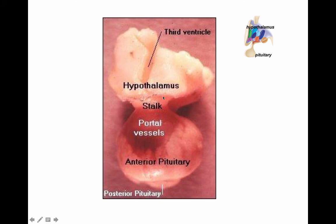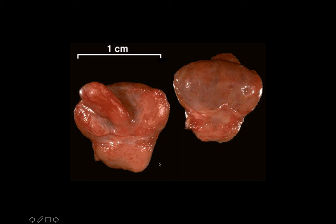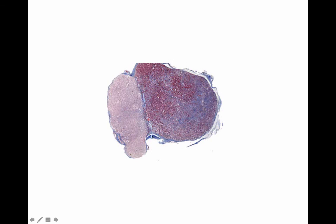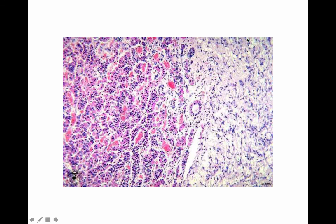The third ventricle surrounds the thalamus, with the infundibulum connecting to both the anterior and posterior pituitary. In dissection, the anterior pituitary is larger and darker, while the posterior pituitary is smaller and lighter. On a histological slide, the lighter-staining portion is most likely the posterior pituitary and the darker-staining portion is the anterior pituitary — a useful distinction to remember.